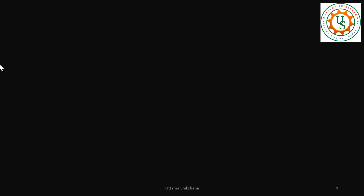So what is the peak power? Peak power is, square root of four is two, two squared means four, right? So peak power is four.